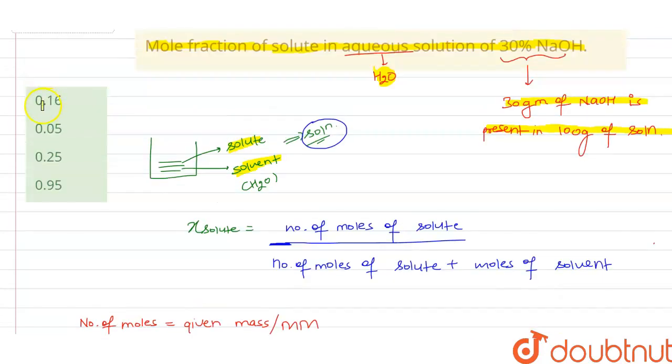Now match the option from the calculated value. We get 0.16 matching with our calculated value. So this is the answer.